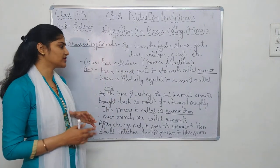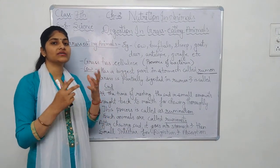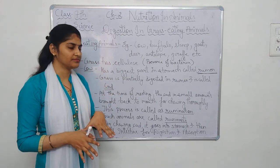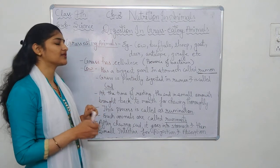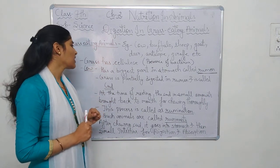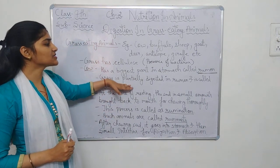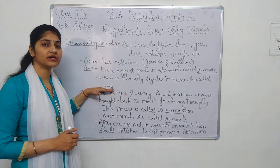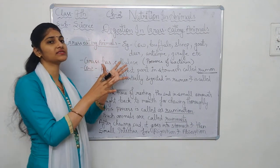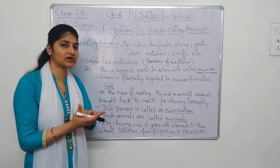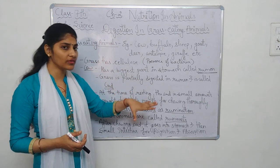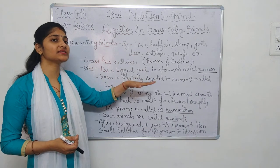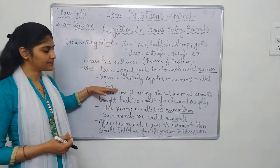What is the function of this rumen? When the cow eats grass, it goes into the rumen first — that is the first compartment of the stomach. There, the grass is partially digested and then it is called cud. That means when the grass is chewed by the cow, it goes into the rumen, and in the rumen it is partially digested and hence it is called cud.